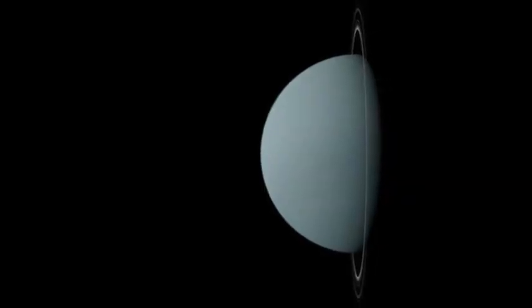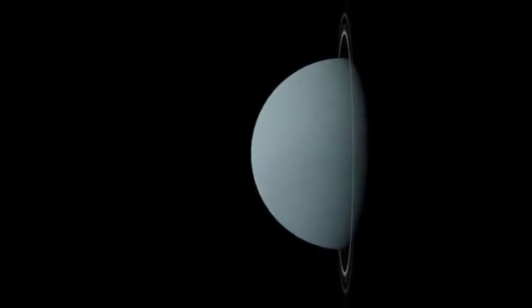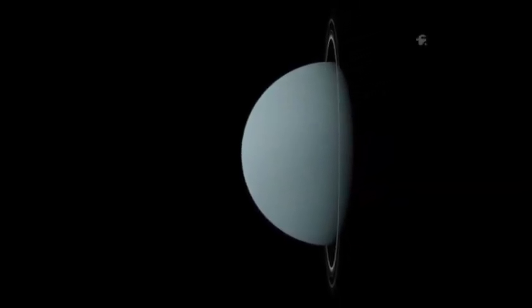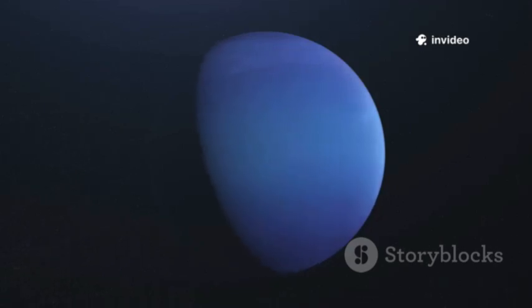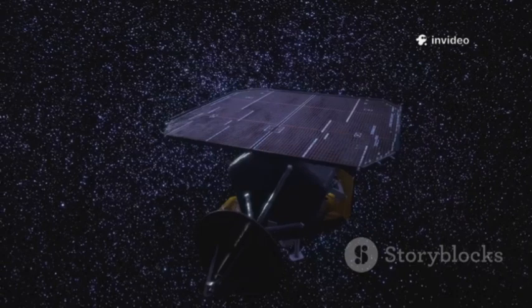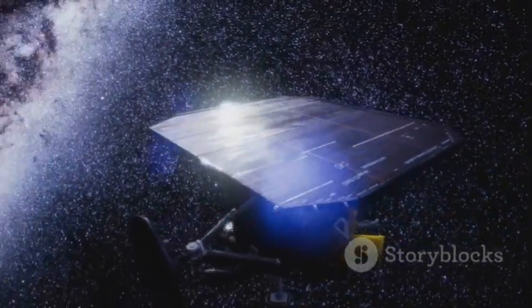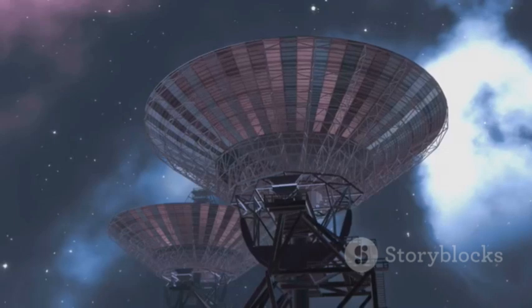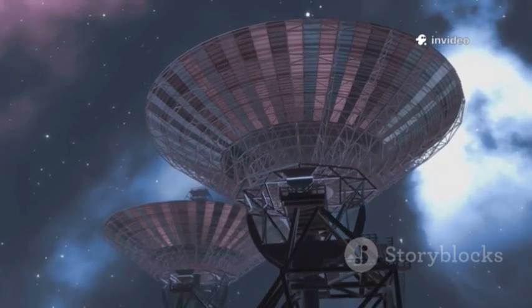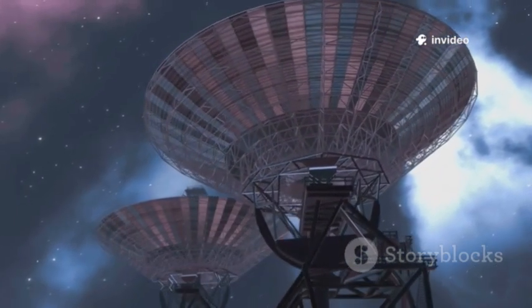It became the only spacecraft to visit Uranus, discovering its tilted axis and faint rings. Neptune was next, a blue world of storms and icy geysers on Triton. After the planetary tour, Voyager 2 pressed into the unknown, its instruments still working as sunlight faded to a thousandth of Earth's. Communicating took hours, but the probe kept going, powered by its nuclear heart.